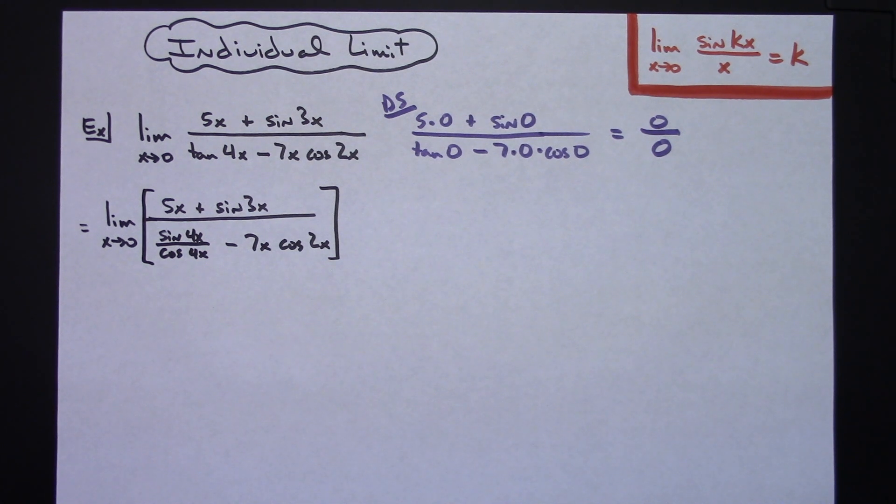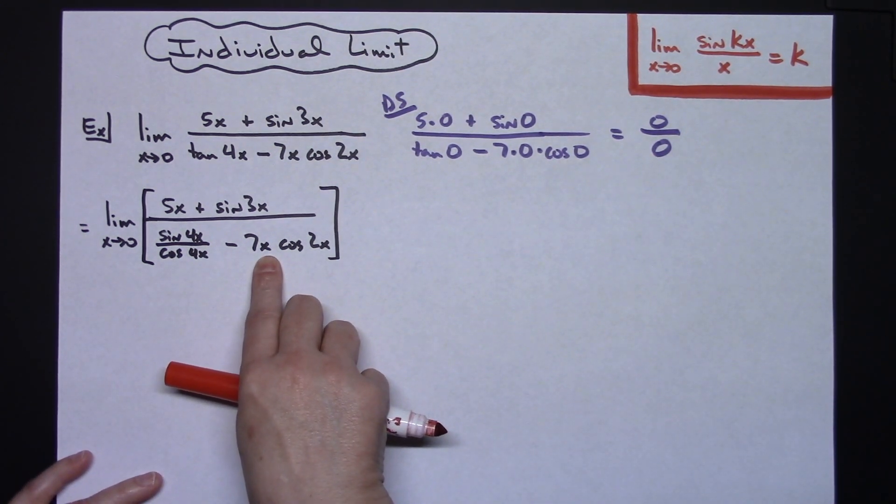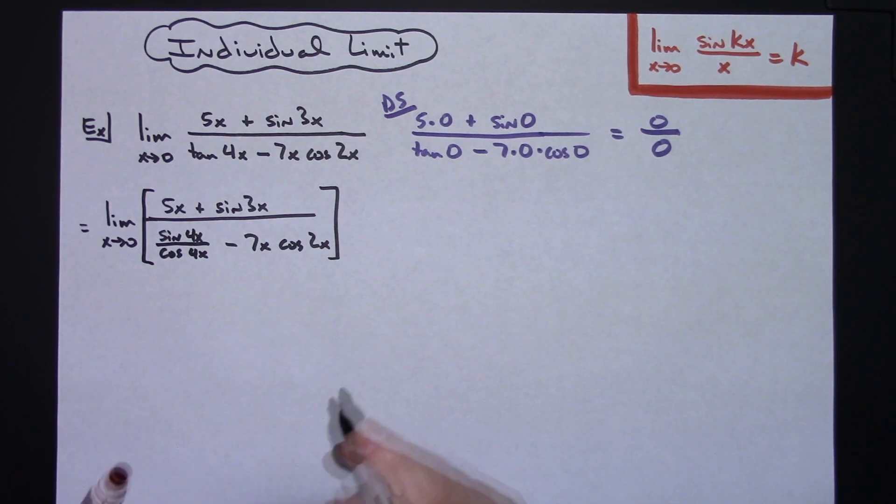Now at this point I'm going to divide through by the highest power of x in the denominator, which is a skill that you learn on limits. I'm seeing this x right here as being the highest power of x in the denominator. So I'm dividing through by the highest power of x in the denominator.